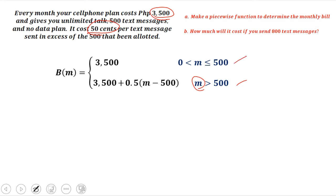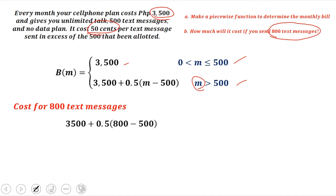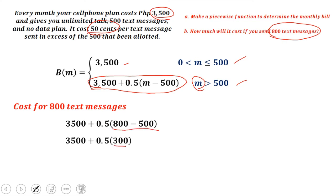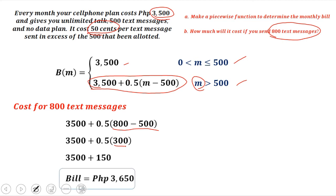So that's the formula to compute your monthly bill when messages are greater than 500; if less than or equal to 500, use the flat rate formula. Now, to compute the monthly bill for 800 text messages, M equals 800, so we use the second formula. We have 800 minus 500 equals 300, then multiply by 0.5, which gives 150. So you have an additional 150 pesos. Then 3,500 plus 150 means your monthly bill is 3,650 pesos if you're using 800 text messages.